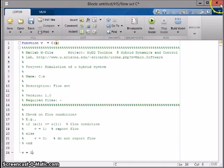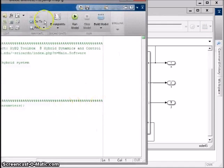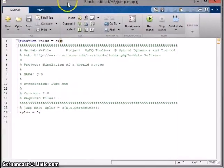Next, we'll move on to the jump map G. Although the model will never access the jump map in this initial example, we type x plus equal to 0, 0.